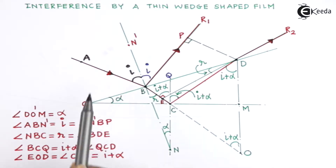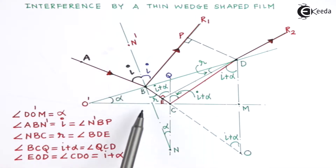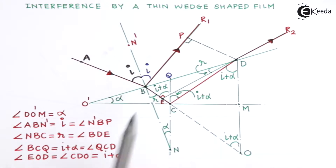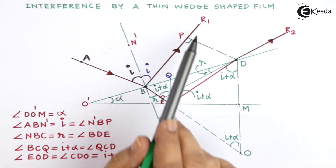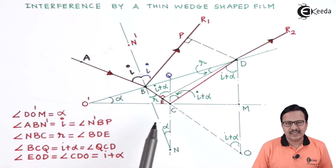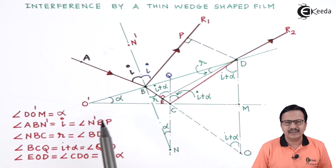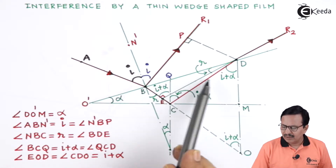We have the incident ray AB which makes an angle I with the normal. At point B there is going to be both reflection and transmission. BR1 is the reflected ray and BC is the transmitted ray. Since the medium inside is air, it will not refract as much as it would in another medium placed inside the wedge.